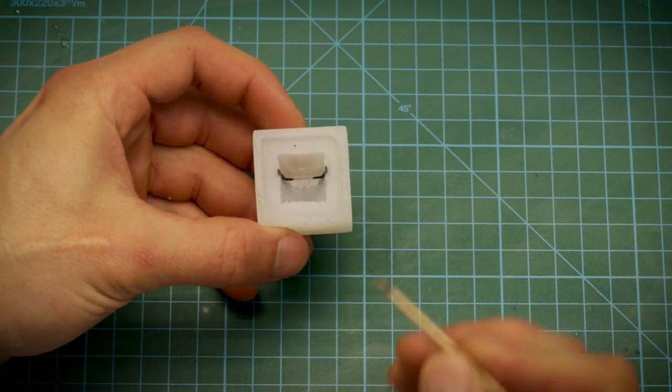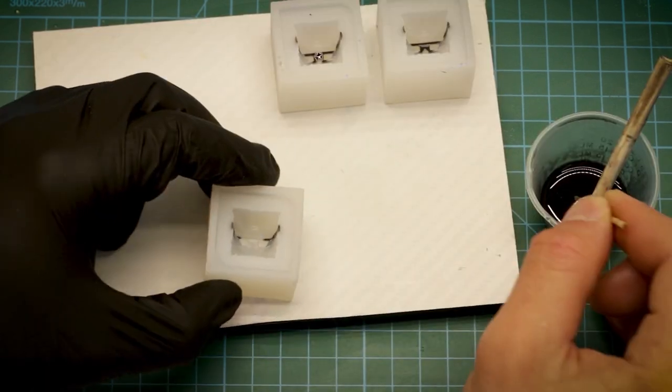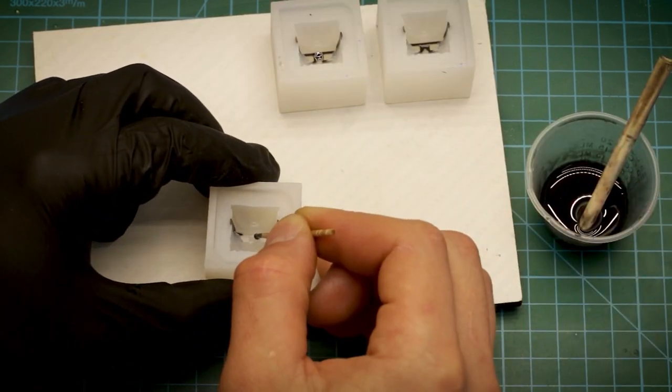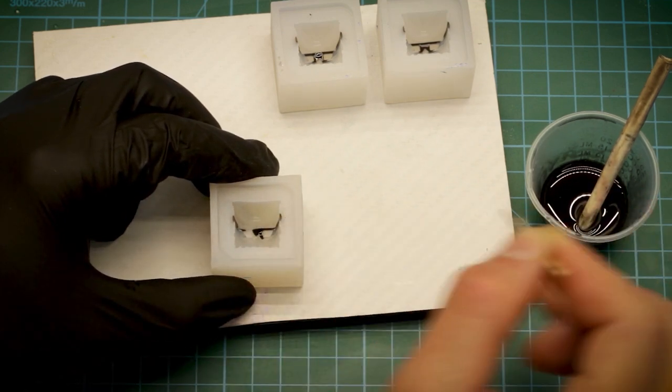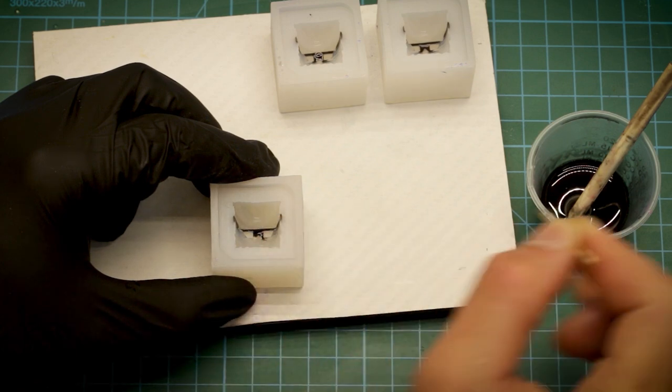Next up, we'll shoot the front of the glasses. This area has some tight spaces, and I really don't want to overfill, so I'll carefully place some drops in the nose area, and let capillary forces pull it through the rest of the feature.